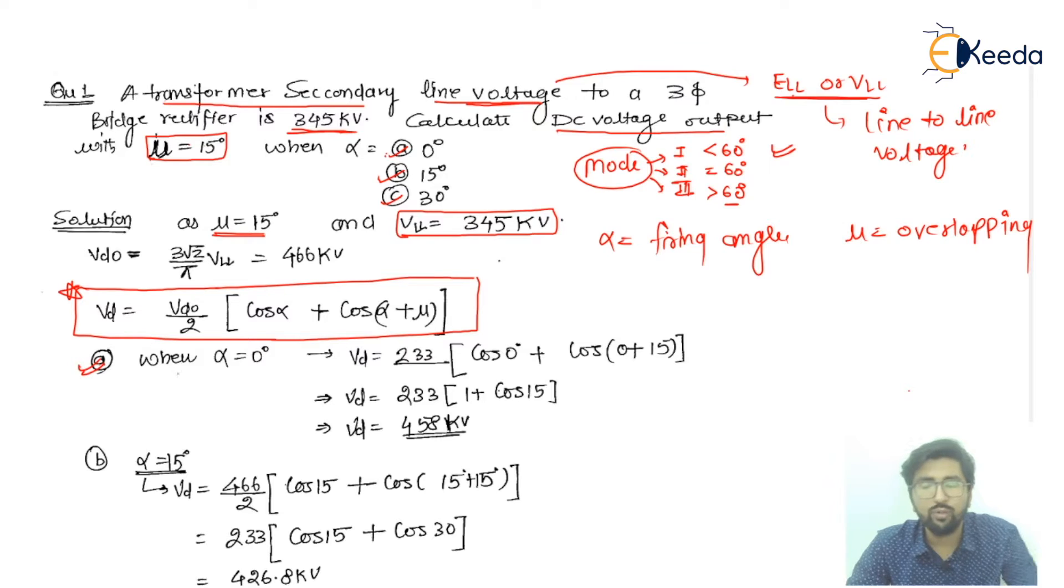Now if I use this formula, then I will go for point number a, that is when alpha is equal to 0 degrees. If I put alpha equal to 0 degrees, then VD is equal to 233, cos 0 degrees plus cos 0 plus 15 degrees. So cos 0 is actually 1, so I will put it here 1, and cos 15 degrees - so it will be cos 15. So if I calculate, why 233 came? Because the VD0 by 2, as the VD0, we will calculate it from here.